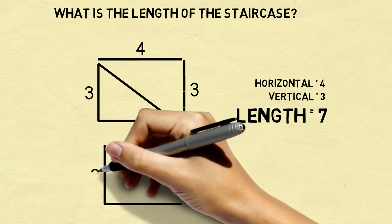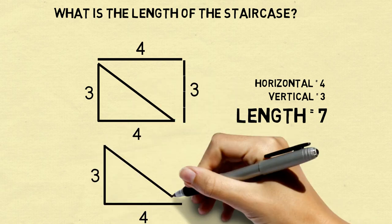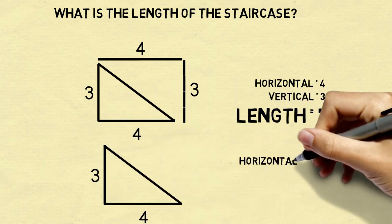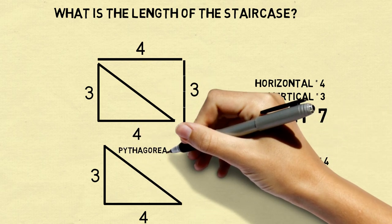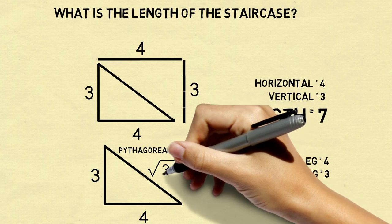Now comes the interesting point. In geometry class, if you had a right triangle with a horizontal leg of 4 and a vertical leg of 3, you would solve for the diagonal by the Pythagorean theorem.